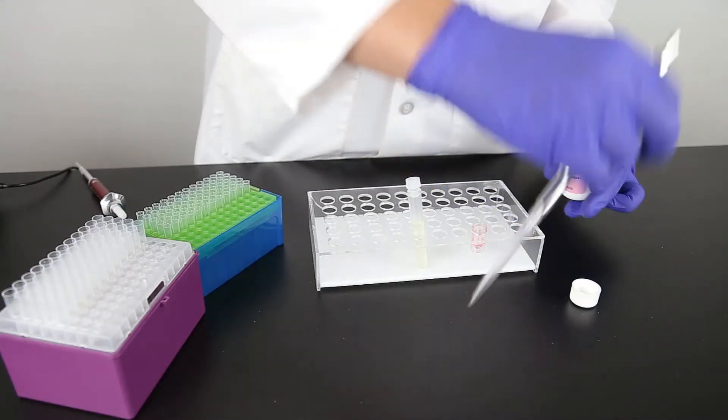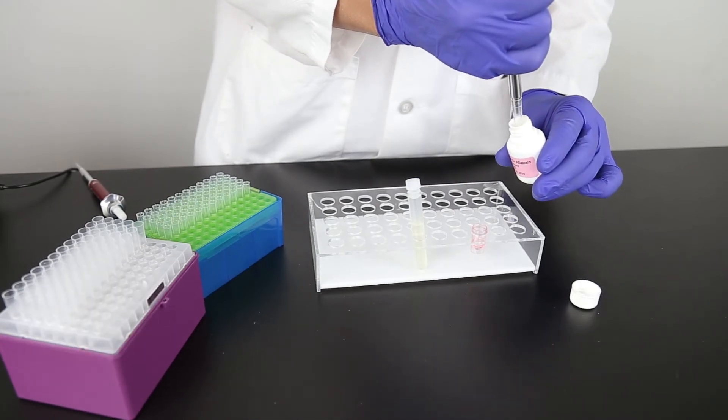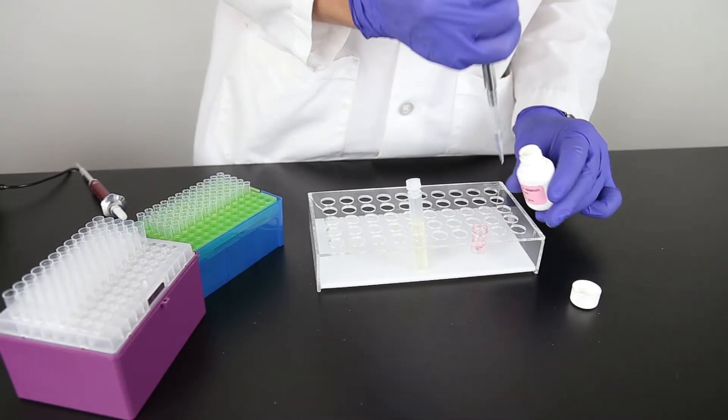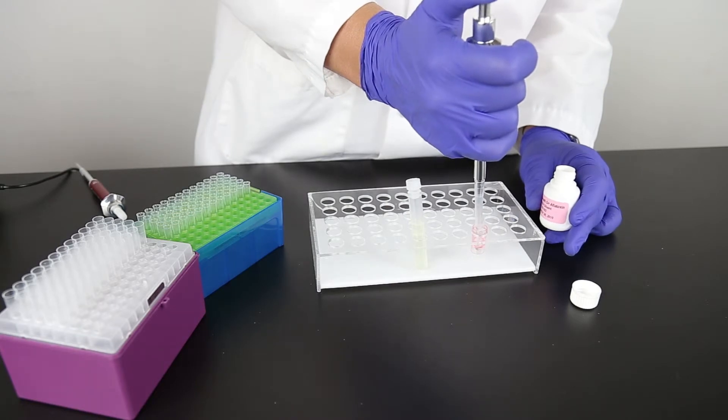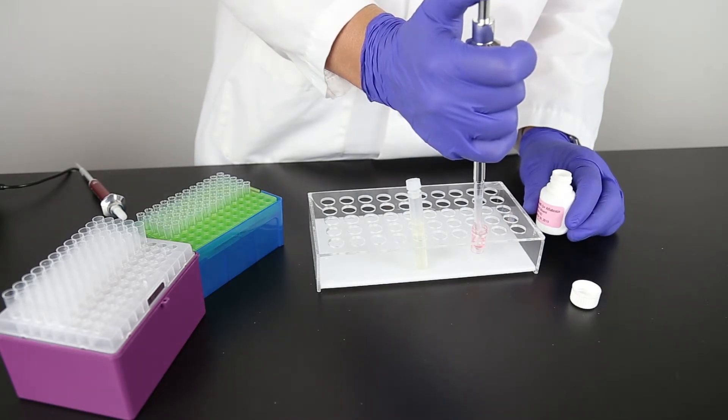Next, add 500 microliters sample diluent to the sample cup. Mix by pipetting up and down five times. It is important to mix thoroughly.